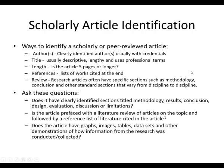If you want a scholarly peer-reviewed article, here are the ways to identify one: the authors are clearly identified, usually with their credentials and where they work; the title is usually very descriptive and lengthy; the article is usually longer than five pages; and there's always a reference list or bibliography at the end. A lot of times articles will have specific sections such as a literature review, the methodology, and the conclusion. So look at your article — does it have those different sections, a literature review, a reference list, graphs, images, tables? This all tells you whether it's a scholarly article.